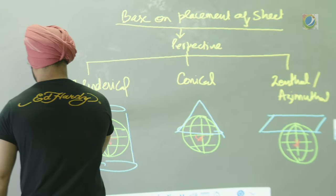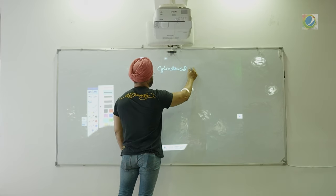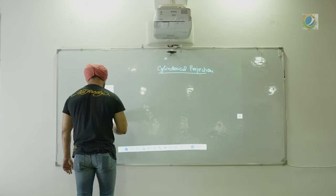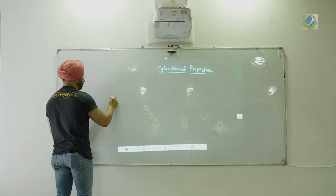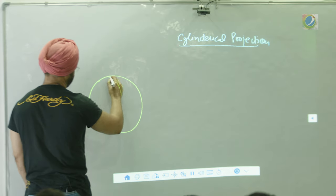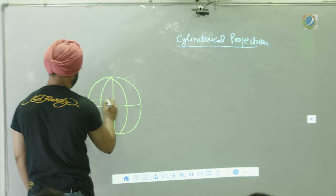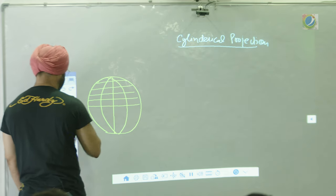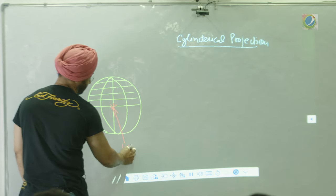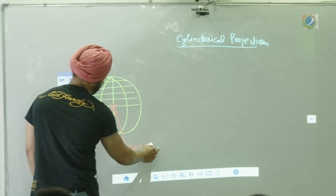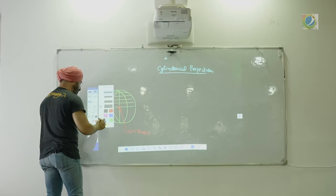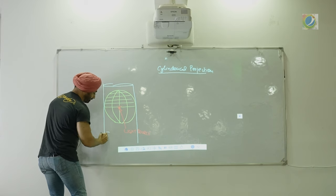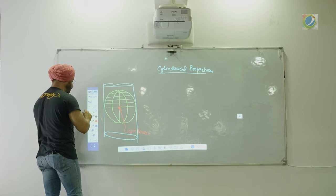Let us see first cylindrical projection. What do we do? We draw all those graticules. We have a light source, latitude, longitude, and in the centre we have a light source and we put the sheet in the form of a cylinder.